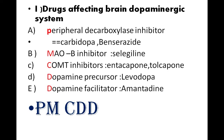To remember the dopaminergic system drugs, use the mnemonic PMCD — like 'Prime Minister's CD'. P stands for peripheral decarboxylase inhibitor, M stands for MAO-B inhibitor with examples like selegiline.